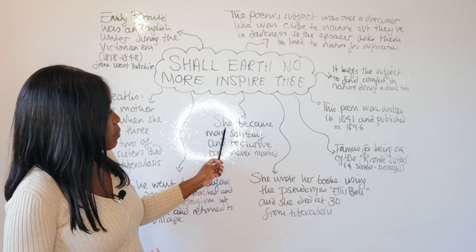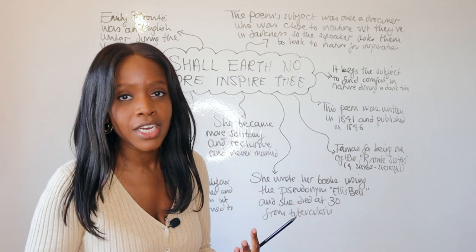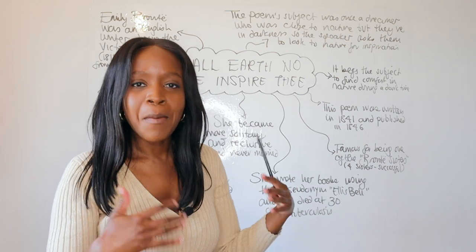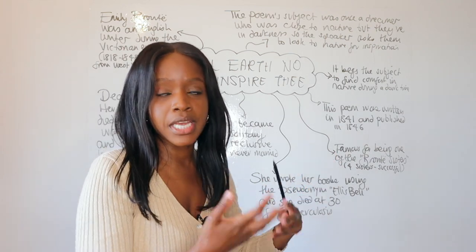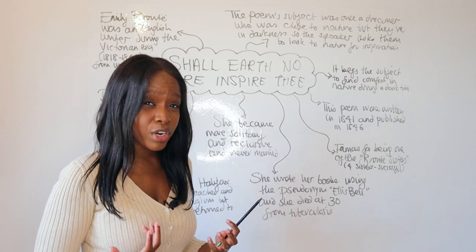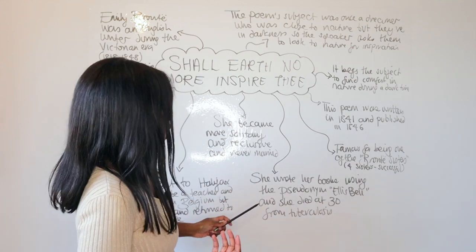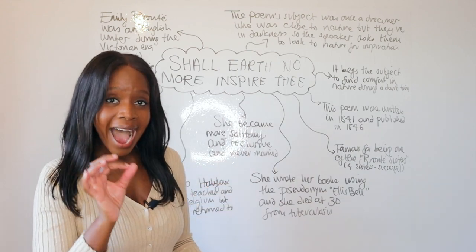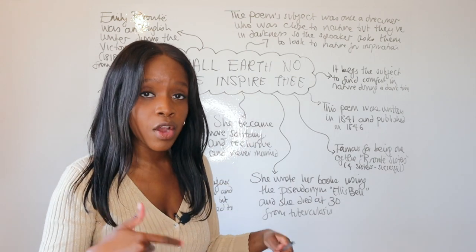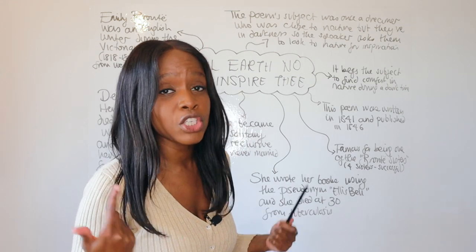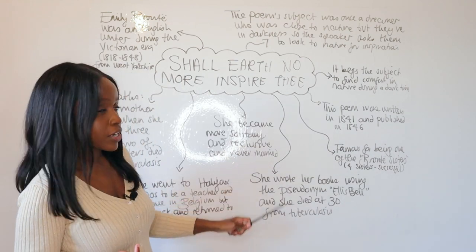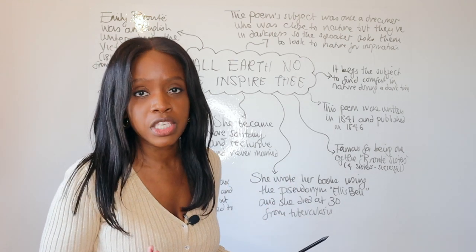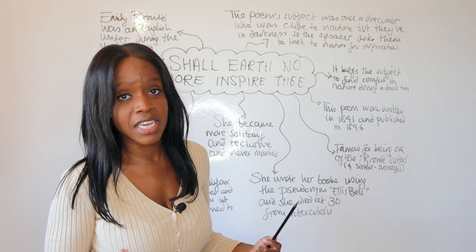Emily Brontë, as she grew older — she didn't become very old because she died at 30 — but in her 20s she became quite reclusive and very secluded. She started leading a very solitary life, and unlike what was expected of many Victorian women, she never ended up getting married. This ran contrary to what Victorian women were expected to do, which was to get married and have lots of children.